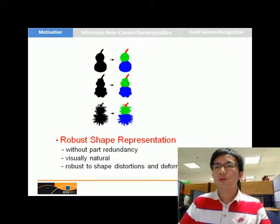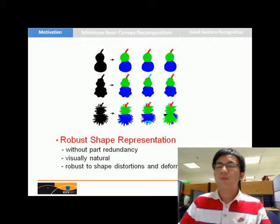So the motivation of this work is to propose a robust shape representation method which has no part redundancy and is visually natural. Most importantly, our method is robust to shape distortions and deformation, as shown in the second column. Our method is more robust than the state of the art.